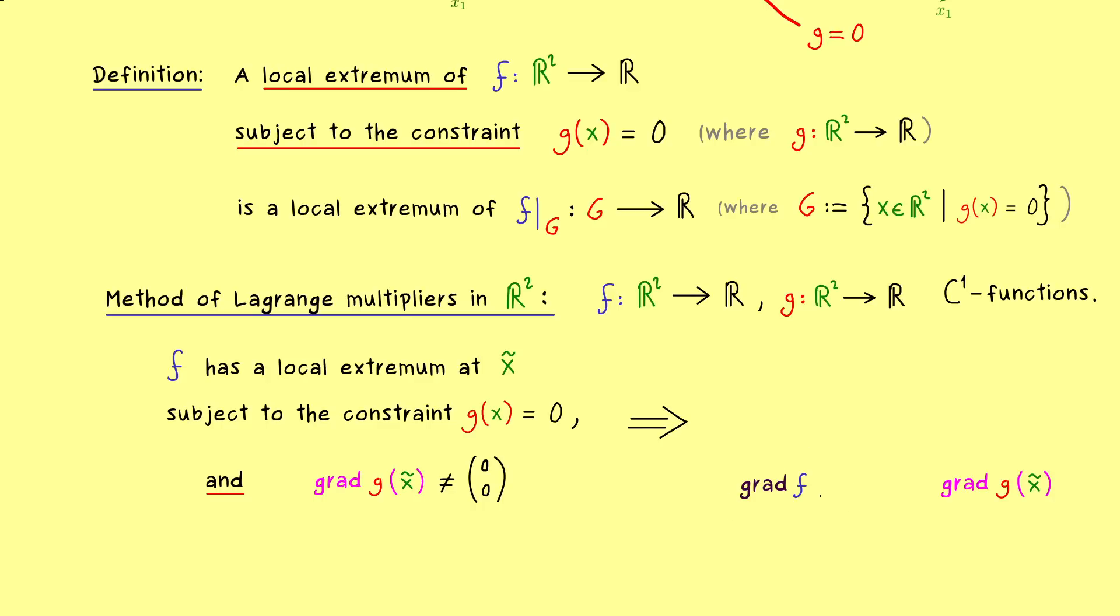Namely, we get that the gradient of f at the point x tilde is parallel to the gradient of g at x tilde. Which means here, that they lie both in the same one dimensional subspace. So the only difference between them is a scalar lambda. So in other words, the implication tells us that we find a real number lambda, such that this equation is correct. And there I can tell you that exactly this number lambda is called a Lagrange multiplier.